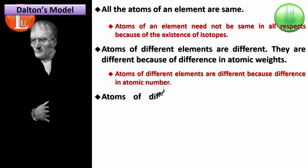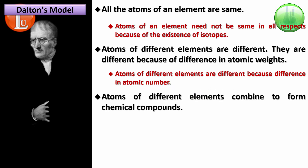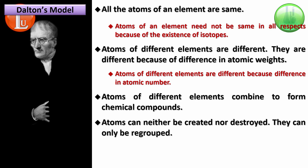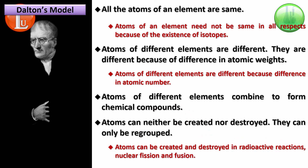Atoms of different elements combine to form chemical compounds, which is absolutely fine. But the postulate that atoms can neither be created nor destroyed — only regrouped — was also shown to be incorrect. We know radioactivity, nuclear fission, and fusion, where mass is not conserved. If mass is not conserved, atoms are not conserved. Elements can change into another element in radioactivity. So most of Dalton's basic ideas weren't working. But the fact that he proposed them and had some basis in the form of experiments was itself a very big achievement.